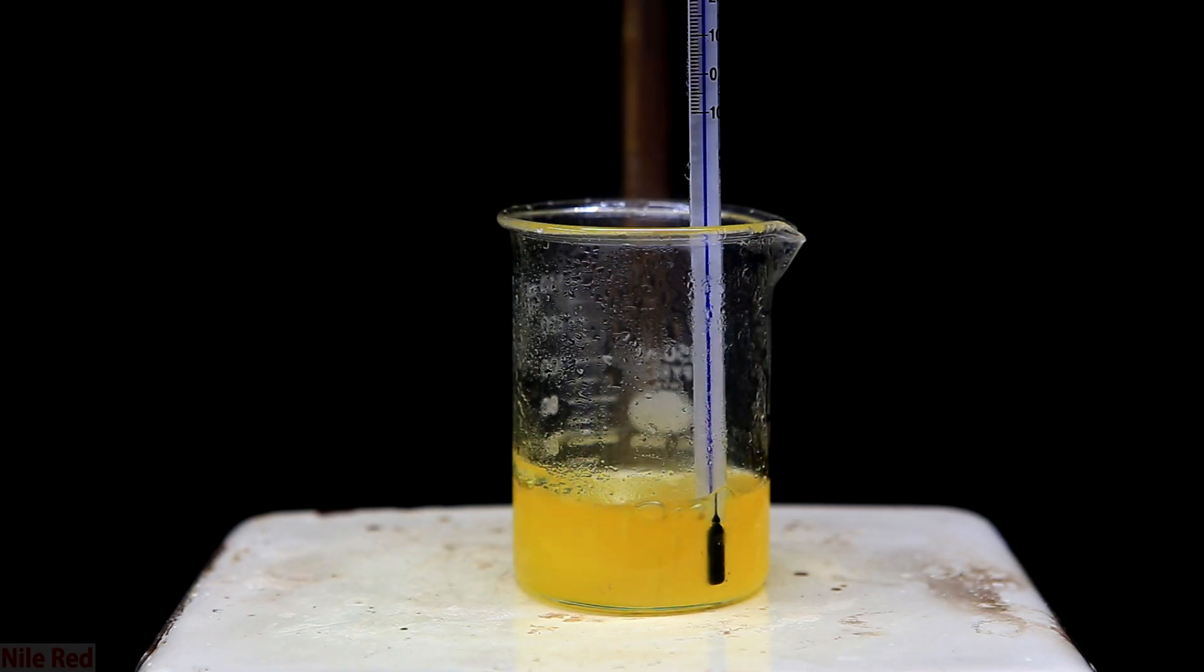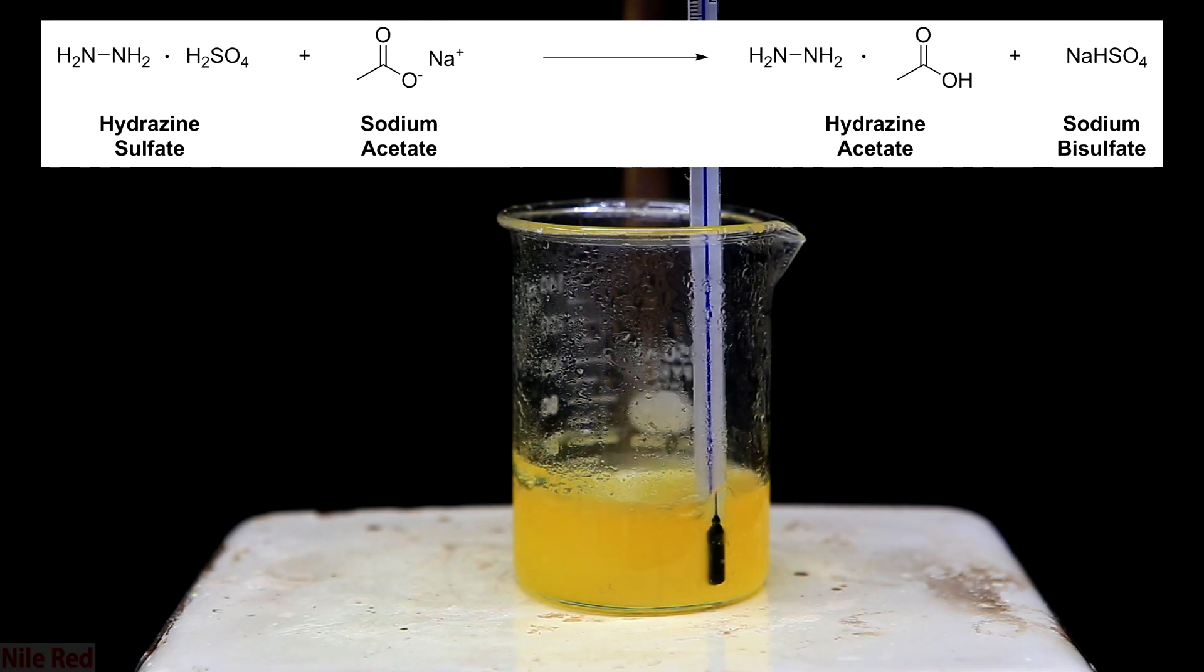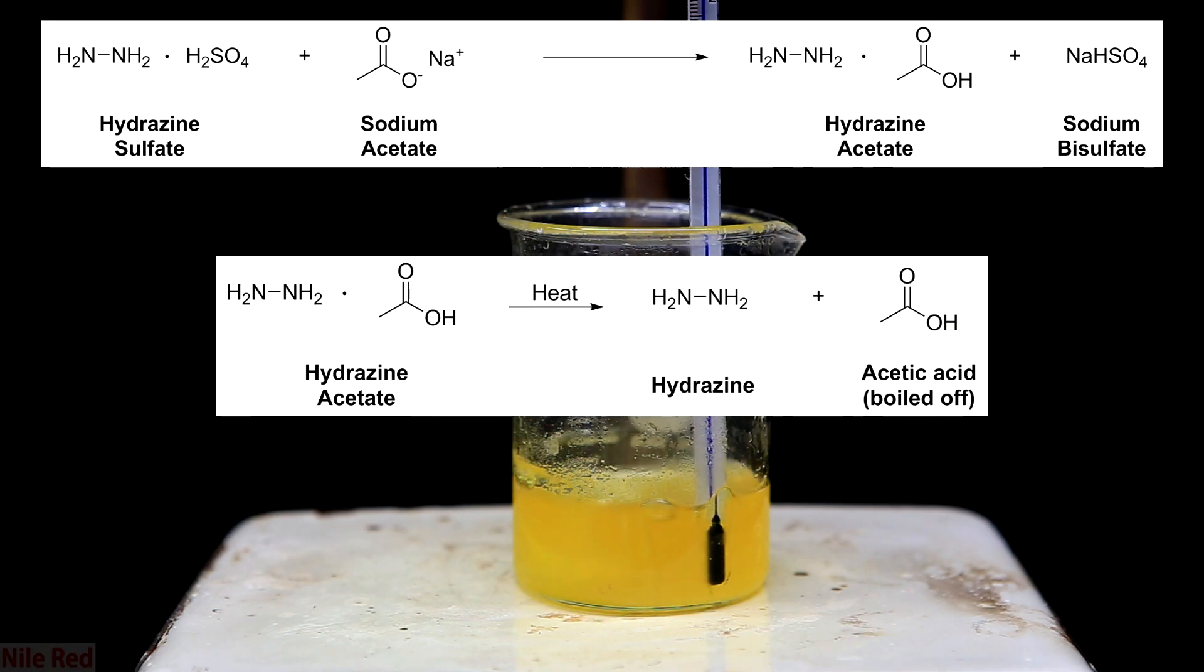The reaction going on here is not too complicated. The hydrazine sulfate and sodium acetate react to form hydrazine acetate and sodium bisulfate. The formation of the hydrazine acetate allows us to heat the reaction and boil off the acetic acid, and therefore create freebase hydrazine. Going with this method where the freebase hydrazine is produced in the reaction mixture is much safer because hydrazine is pretty toxic and dangerous. This way, we can still conduct a reaction that needs freebase hydrazine, but we don't have to worry about handling it.